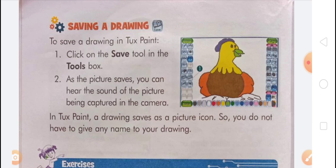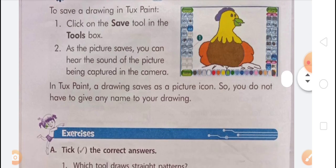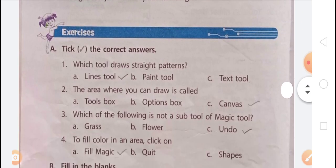Exercise — Tick the correct answer. Question 1: Which tool draws straight patterns? Options: A) Lines tool, B) Paint tool, C) Text tool. The Lines tool draws straight lines and you can also create straight patterns using it, so the answer is option A — Lines tool.